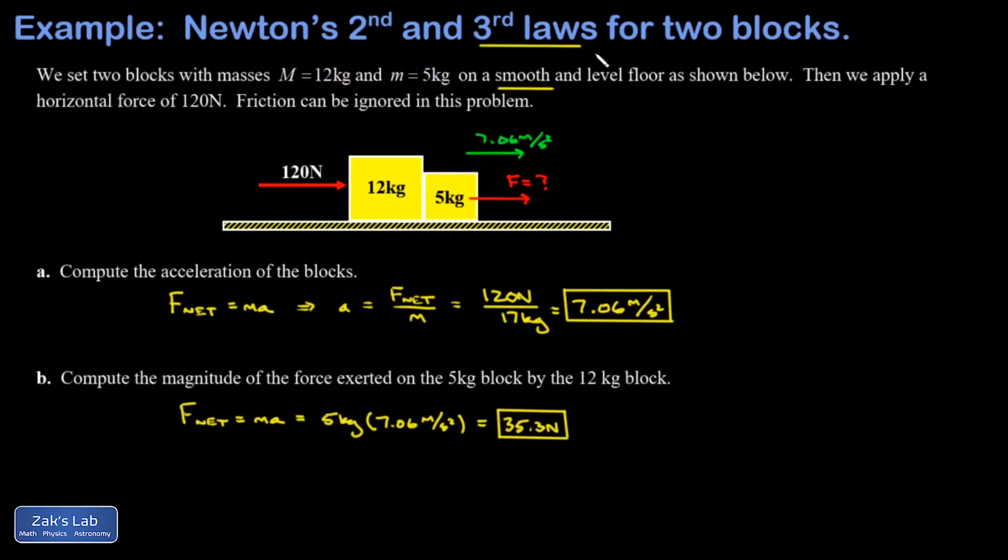If that 5-kilogram block is feeling a 35.3 newton force pushing to the right from the 12-kilogram block, it means that the 5-kilogram block must be exerting a force to the left on the 12-kilogram block.